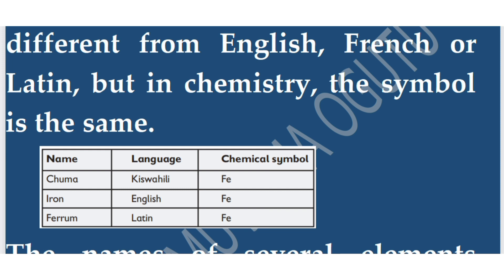No matter the name we call it in any given language, the chemical symbol remains the same. Iron's English name is 'iron,' but the chemical symbol is Fe, derived from the Latin name ferrum. The symbol remains the same regardless of language.